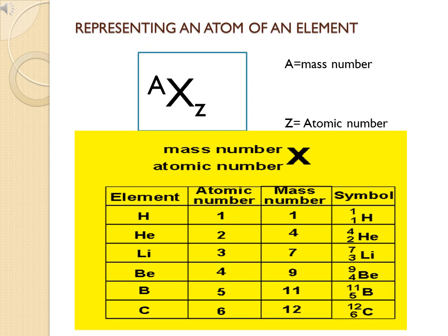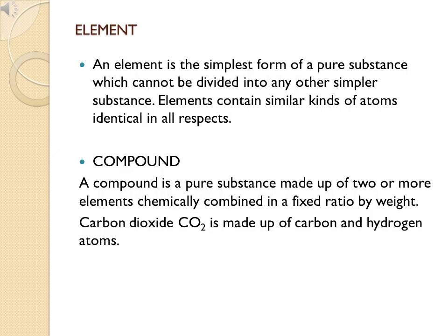For boron (11, 5): mass number is 11 and atomic number is 5. So boron has 5 protons and 5 electrons. The neutron number is 11 minus 5, which equals 6 neutrons.